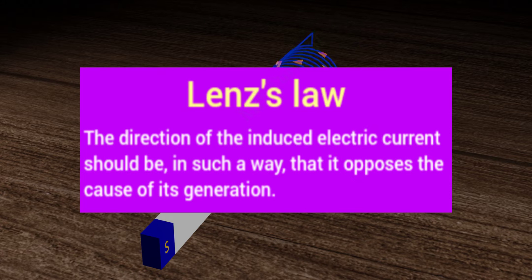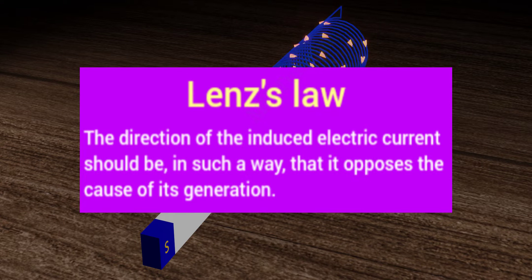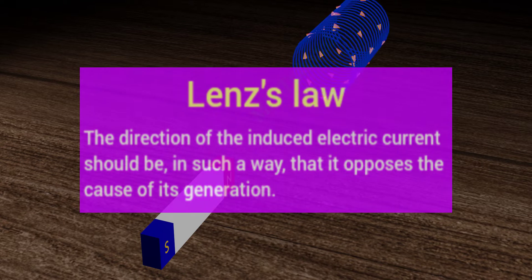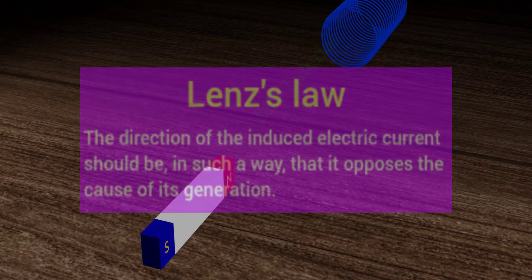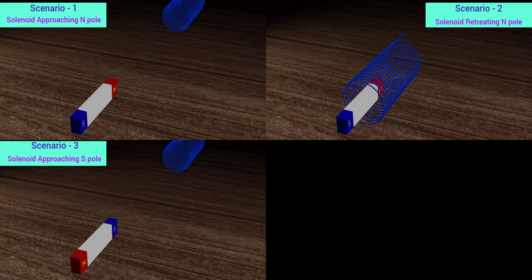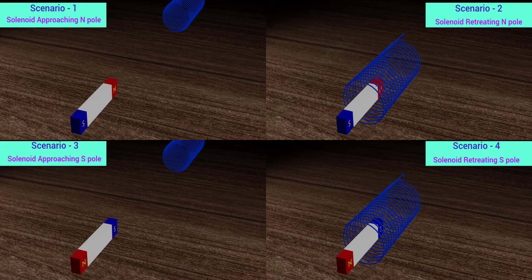Have you understood these lines? Well, here is the explanation. When a solenoid moves about a magnet, four possible situations may arise. Let us view them one by one.